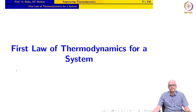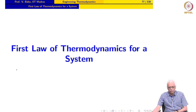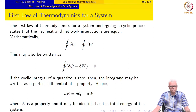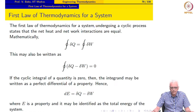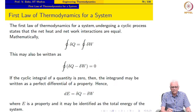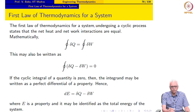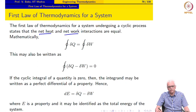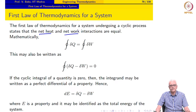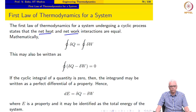We take absence of proof in this case to be proof of absence. Based on extensive experiments, Joule and Clausius found out that for a system undergoing a cyclic process, the net heat and net work interactions are equal. This is what they discovered after going through many experiments where they tried to convert heat to work.